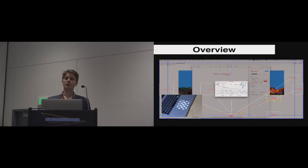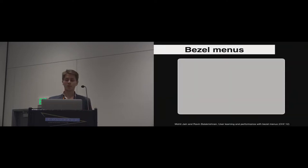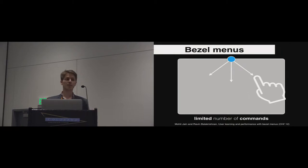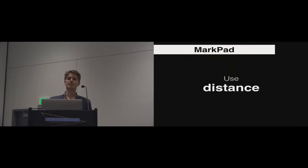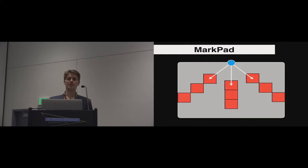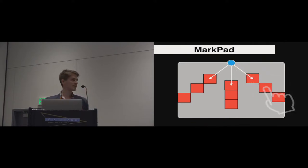How do we not conflict with pointing on a touchpad? A technique has been proposed in the literature for mobile devices called bezel menus. The idea is to start a gesture from the bezel of the interactive surface and then perform a gesture. But the problem here is the limited number of commands you can perform with that. To increase that number, what we propose is to use the distance in the design. Using the same interaction technique, the user has the possibility to stop at different distances — different ending areas. So, using one direction, the user can perform several gestures using different distances.